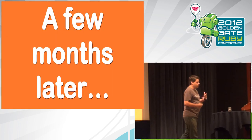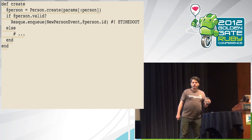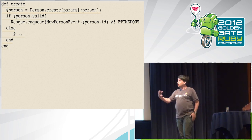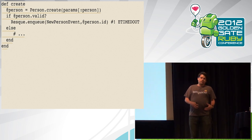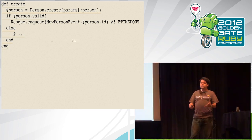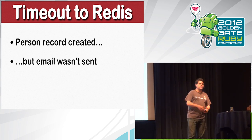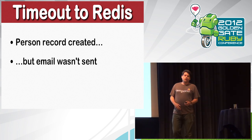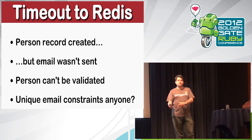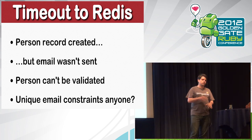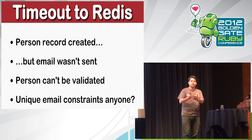A few months later, we've configured our application so if anything goes wrong, we get an email. We get such an email: the line of code enqueuing to Resque generated a timeout — when it tried to talk to Redis, it timed out and blew up. This doesn't happen often, but it does happen and you can never prevent it. So what's the state of our system? A user account has been created in the database, but they're never going to get that email — they need to click it to validate their account. And we have a unique constraint on the email field, so if the user tries to sign up again, it won't work because their email has been taken. These were all good things we put in place, and they've all come together to create a weird situation.